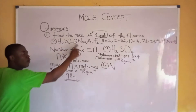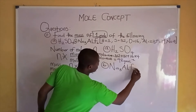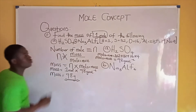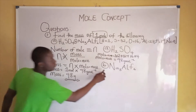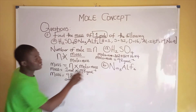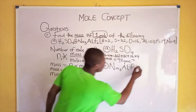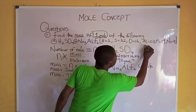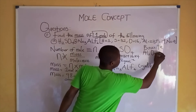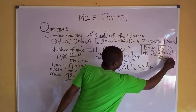Now let's find the mass of one mole of Na₃AlF₆. This compound is called Cryolite, and it is one ore of aluminium — but take note, this is not the major ore of aluminium. The major ore of aluminium is called Bauxite, with the chemical formula Al₂O₃·2H₂O.